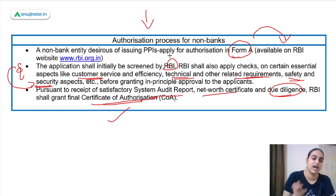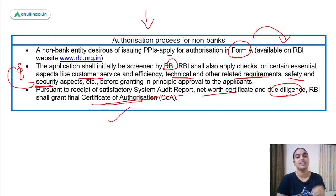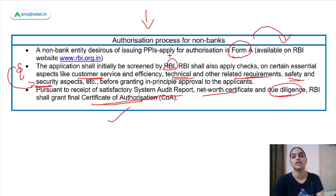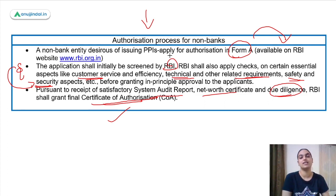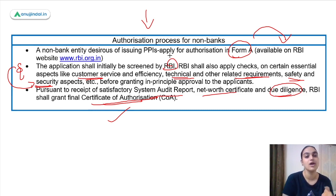For non-banks to get authorization, they apply in Form A on RBI's website. RBI will screen the application, checking customer service capability, technical requirements, and safety and security measures, then grant in-principle approval. After that, the non-bank must provide a system audit report, net worth certificate, and proof of due diligence, following which RBI issues the final certificate of authorization.